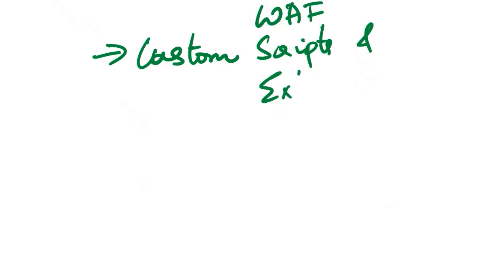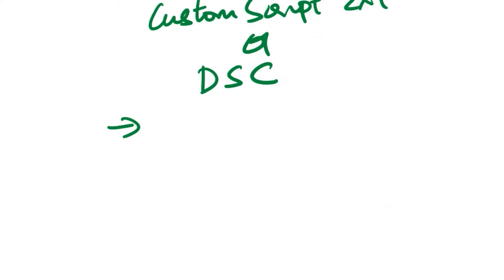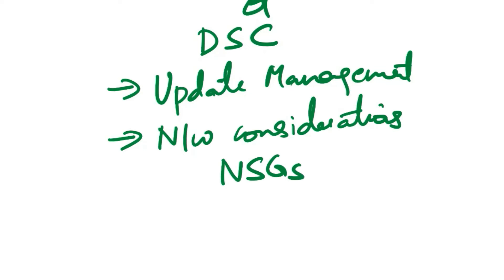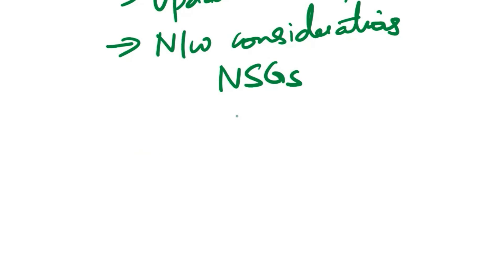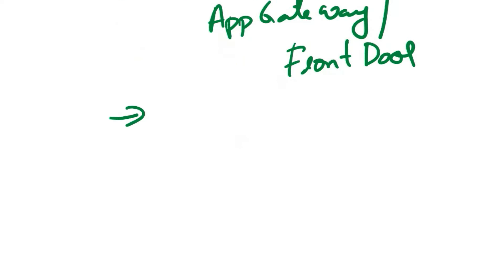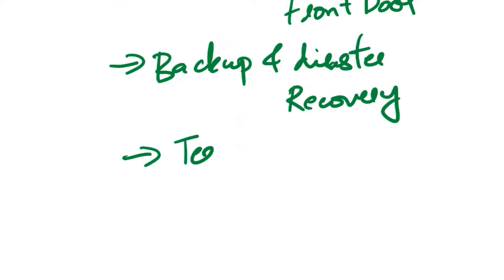For custom scripts and extensions, use custom scripts or extensions to automate configuration tasks during VMSS deployment. Leverage Azure Custom Script Extension or Desired State Configuration (DSC) to customize VM instances. For update management, implement Azure Update Management to automate the patching and update process for VMSS instances, ensuring they are running the latest software. Configure network security groups (NSGs) and virtual network settings appropriately. Consider using Azure Application Gateway or Azure Front Door for additional application-level routing and load balancing. Implement a backup and disaster recovery strategy for critical data and configurations, and regularly test your auto-scaling setup to ensure it responds effectively to changes in demand.